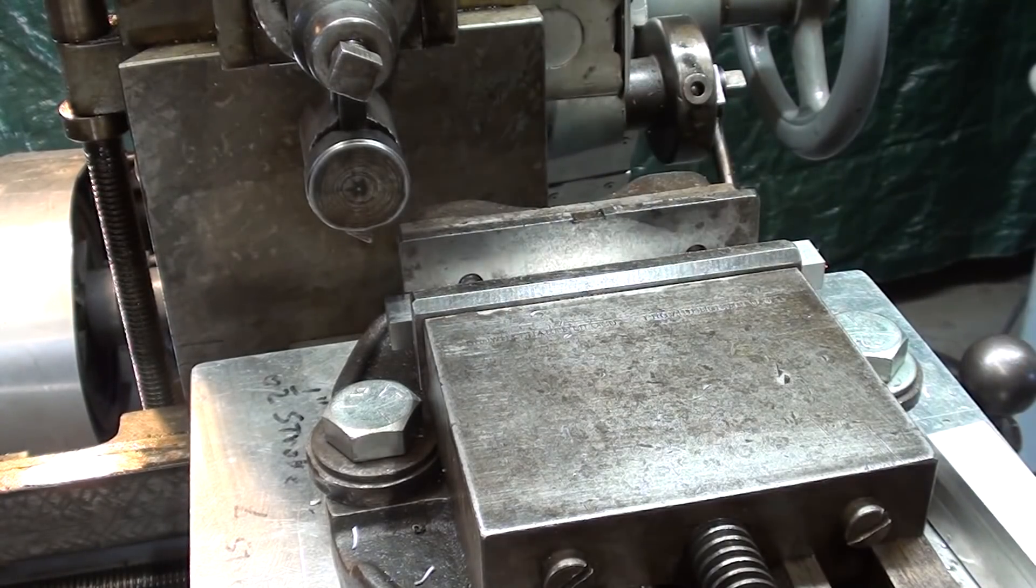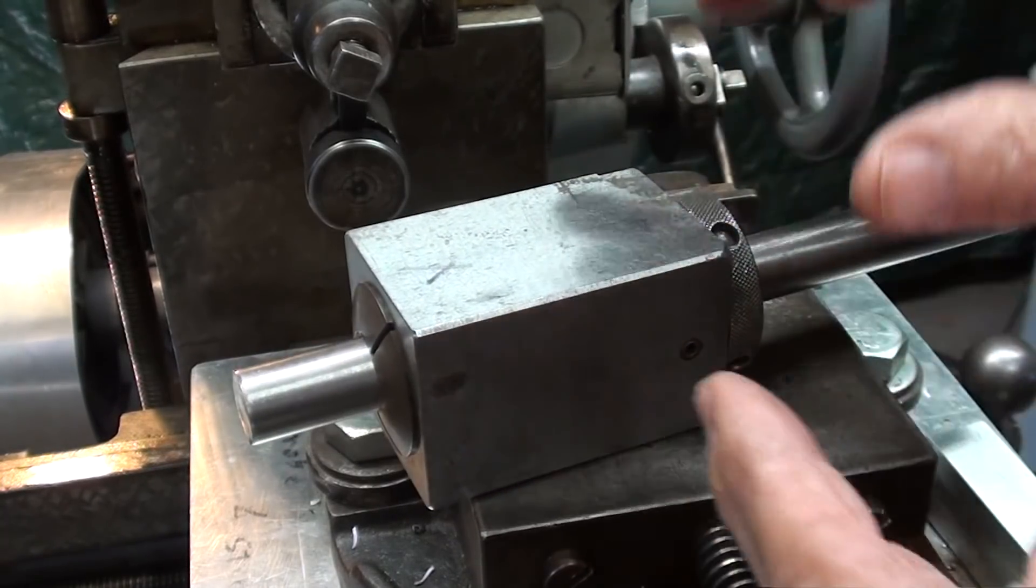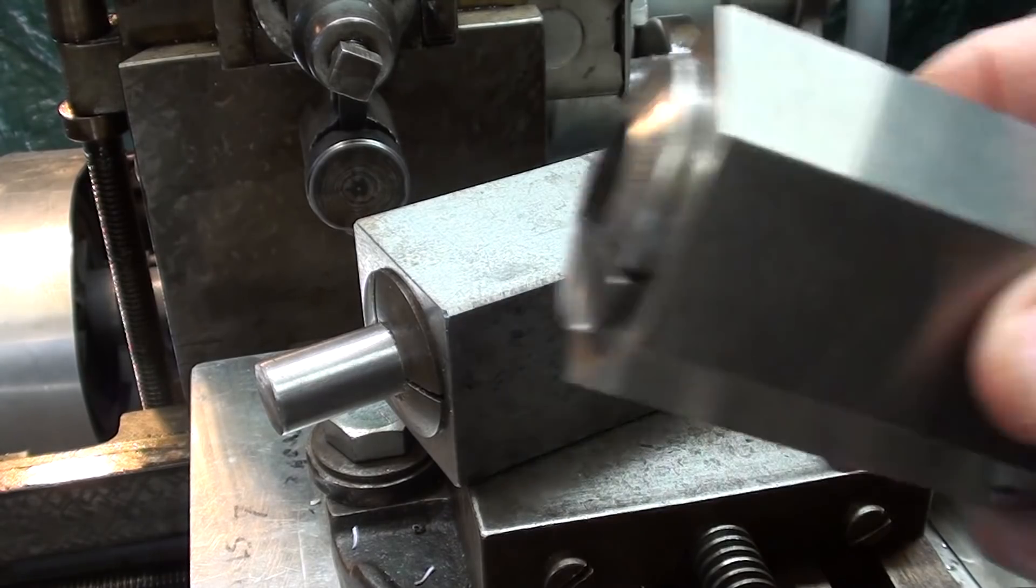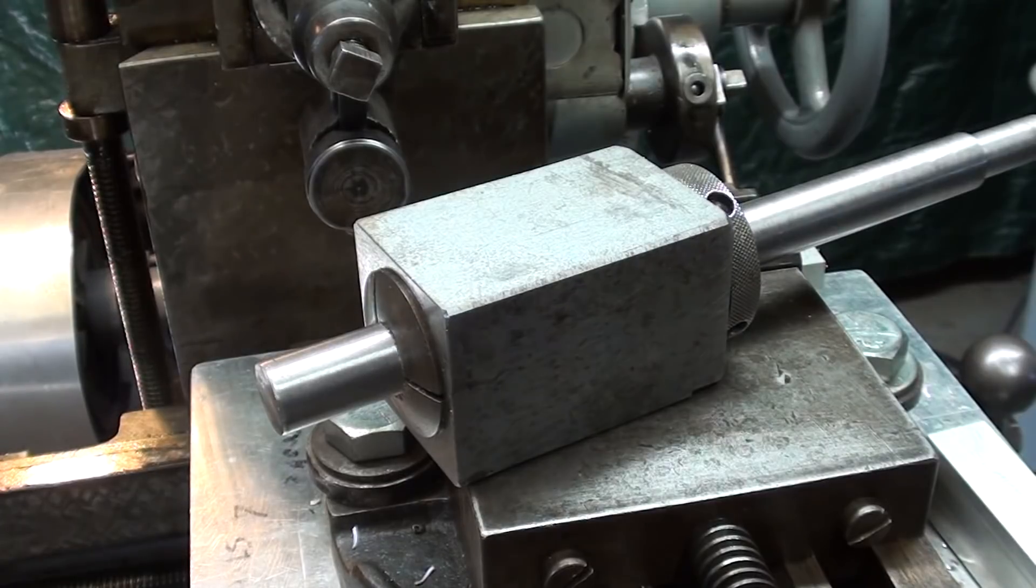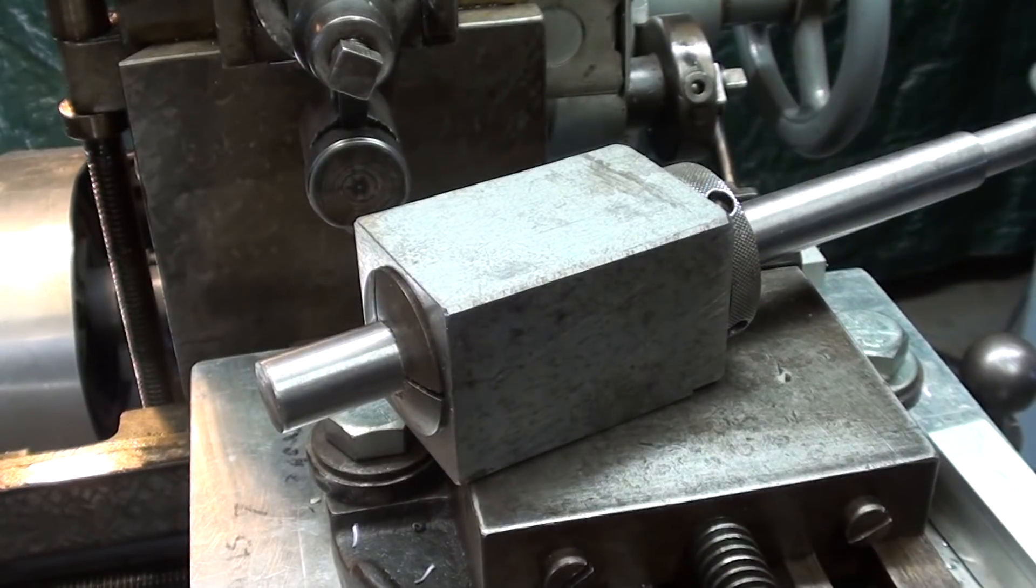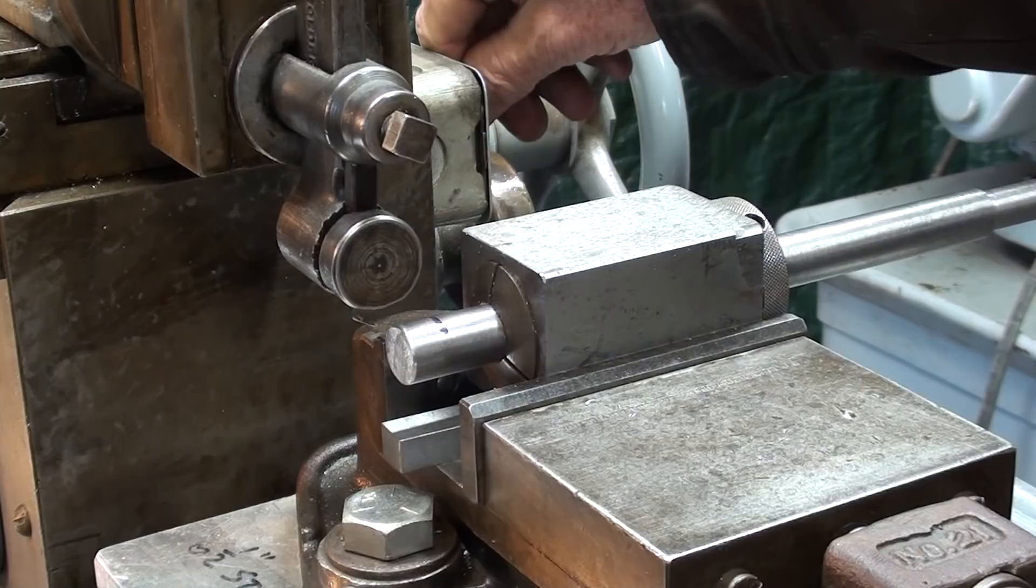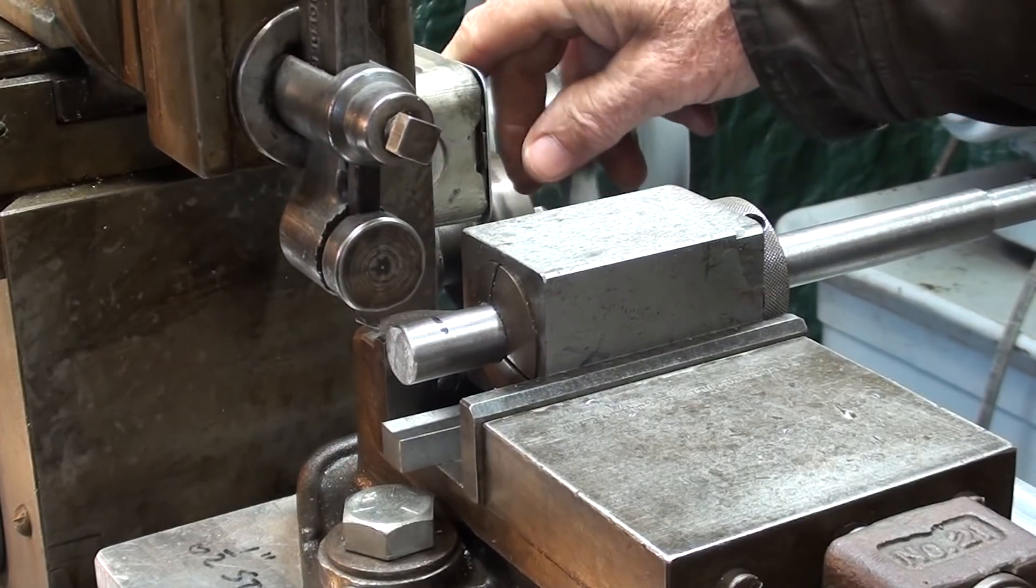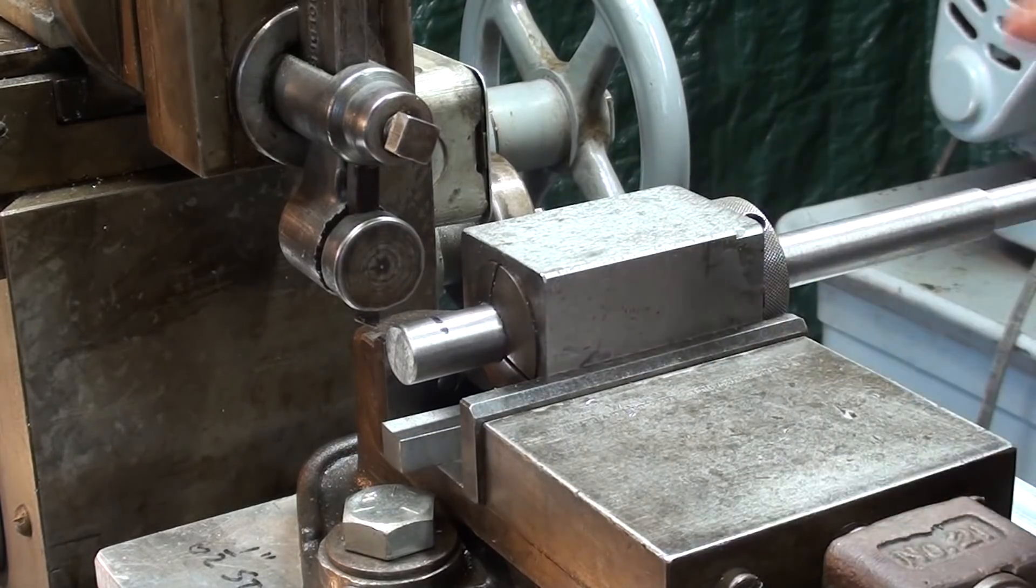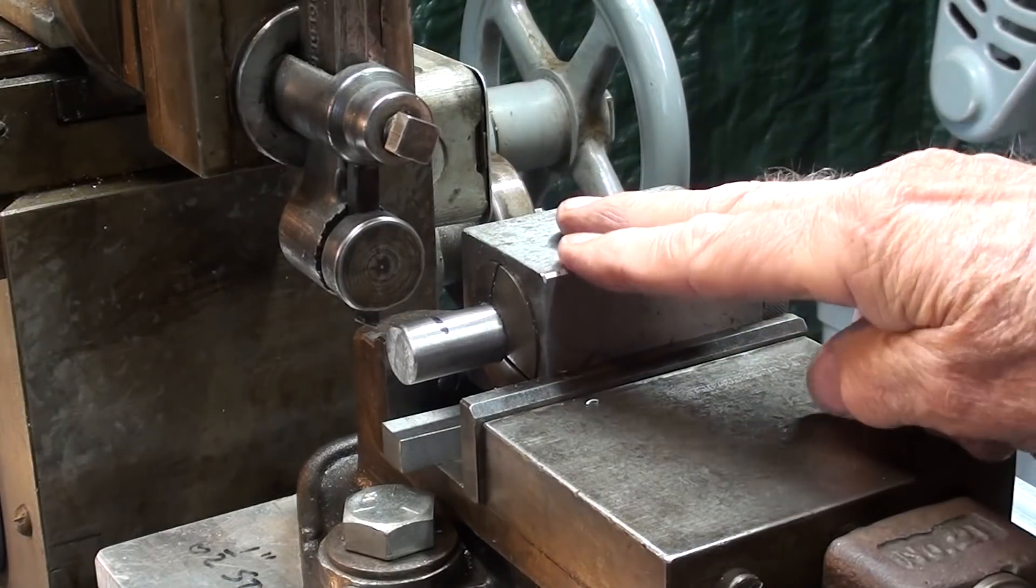But there are times when you may want to put a square or a hex on the end of round stock. In that case, hold it in a collet block. There's a square collet block, and here is a hexagon collet block if you wanted to put a hex on the round stock. So let's turn this into a square, just about a half inch back.